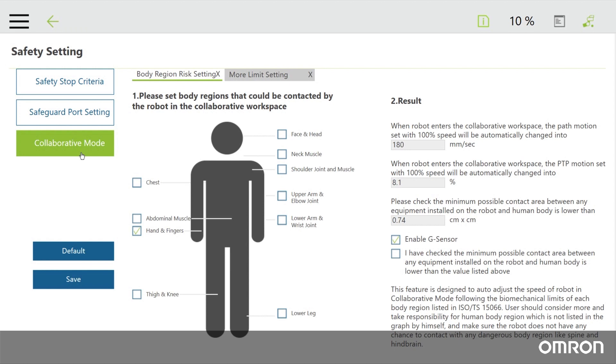For example, if your application requires the cobot to extend its arm to a person's lower leg, click the lower leg region. This will automatically set the cobot's speed to a slower speed when reaching out so that it will lessen the likelihood of causing an injury to any person.